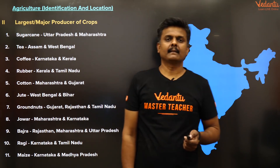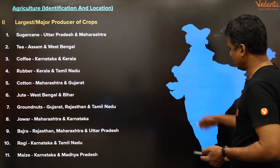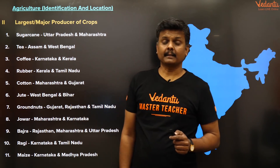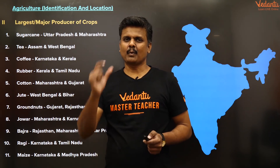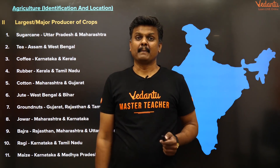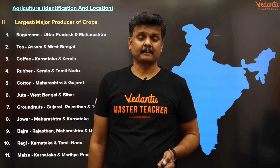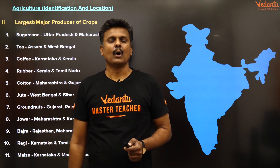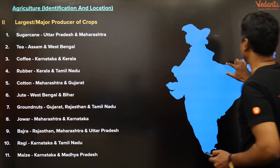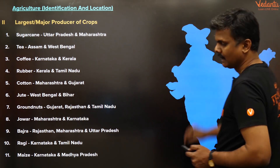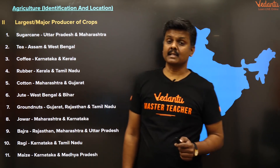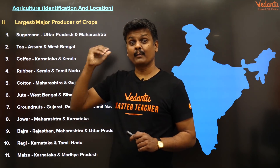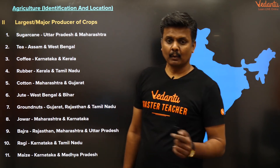Coffee grows in Karnataka and Kerala — that southern belt. Cotton grows best in black soil, so it's typically Maharashtra and Gujarat. Jute grows in West Bengal and Bihar. Groundnuts are grown in Gujarat, Rajasthan, and Tamil Nadu.